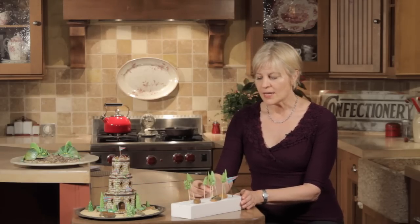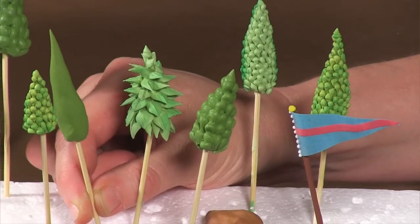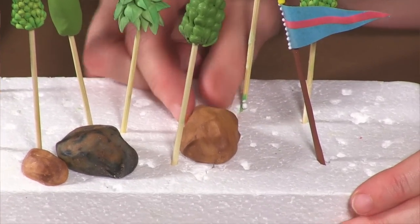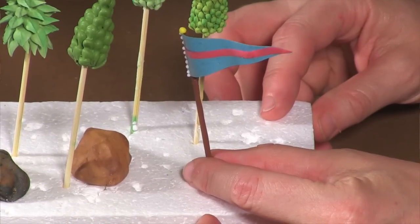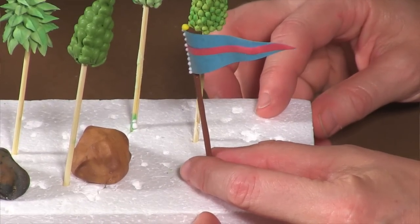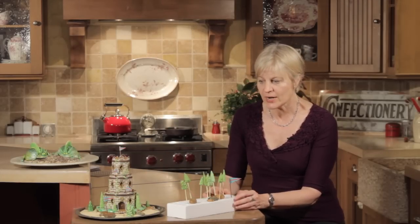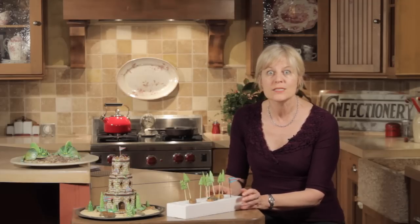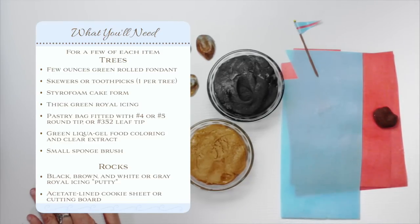In the first part we'll be talking about how to make royal icing trees that use a little fondant core as their infrastructure. I'll also be showing you how to make marbled rocks that are very lifelike using royal icing putty. And lastly I'll be showing you how to make a flag which makes use of a fondant flagpole and a wafer paper flag.